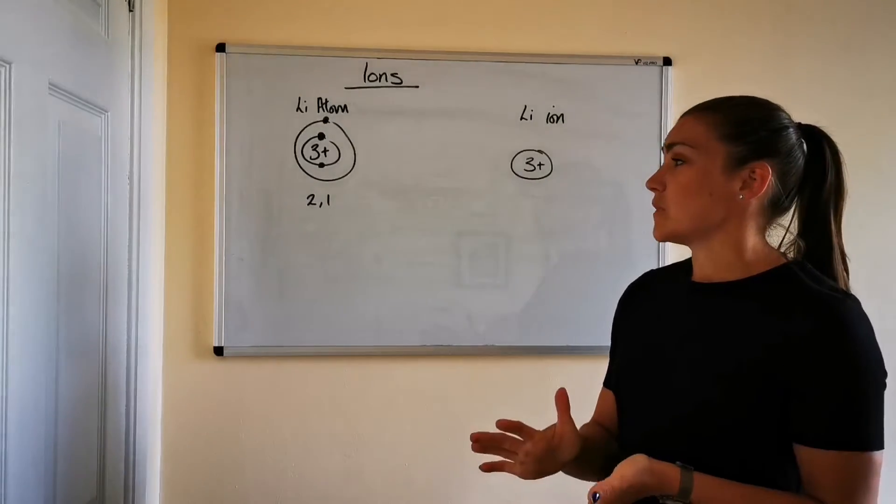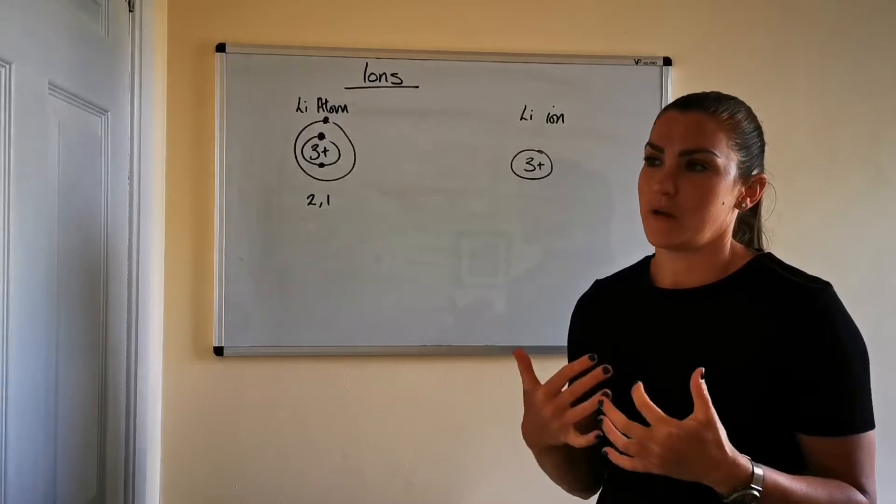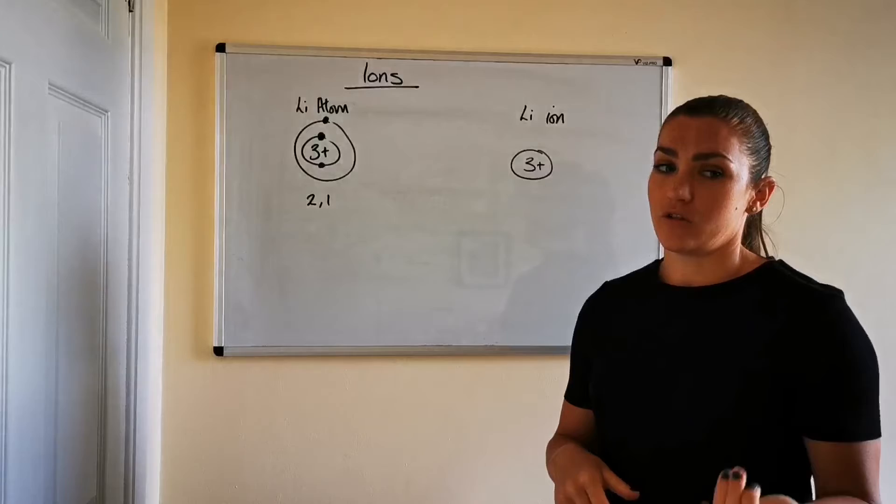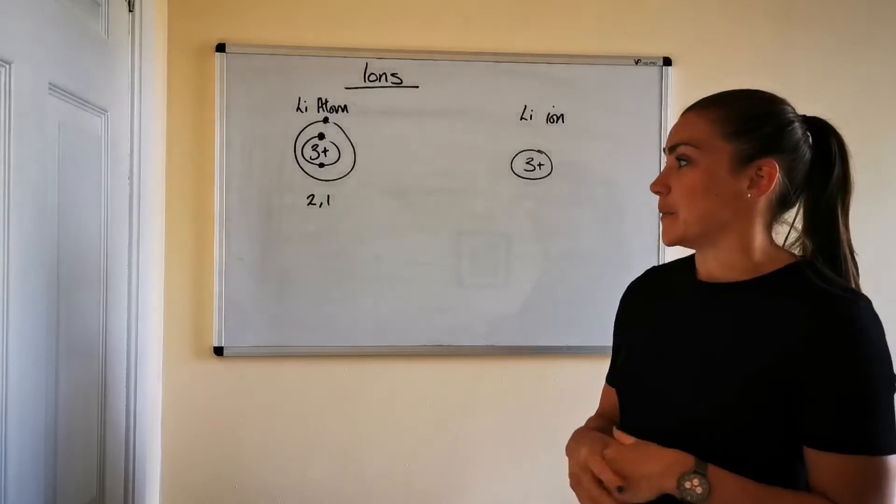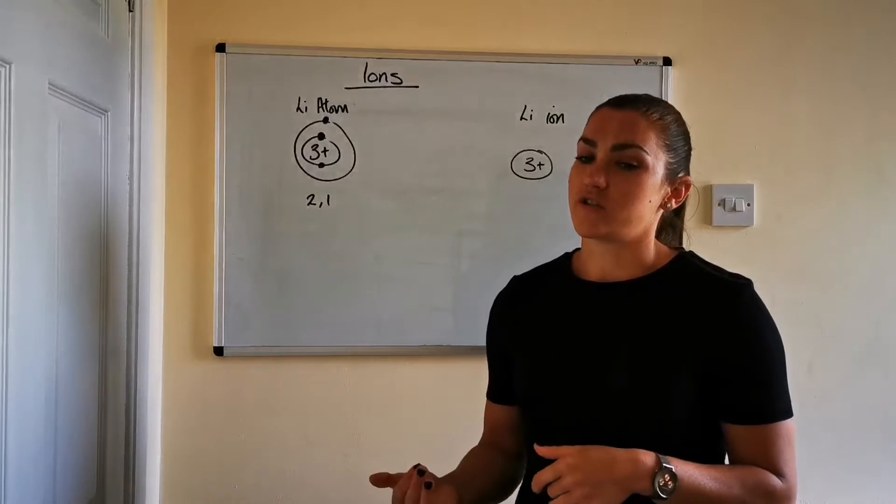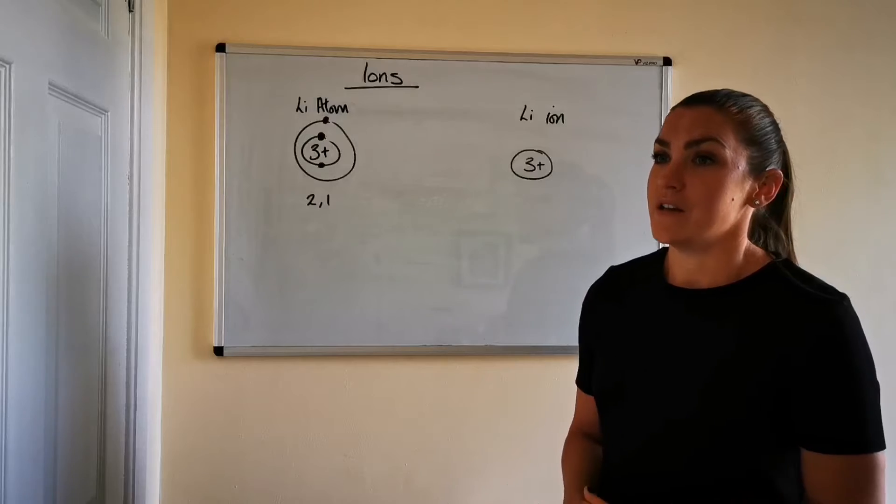So ions are charged particles and basically if a substance or an atom, it's usually atoms that we talk about but you can get ion molecules as well. But essentially if a substance has lost electrons it will become a positive ion. If it gains electrons it will become a negative ion.